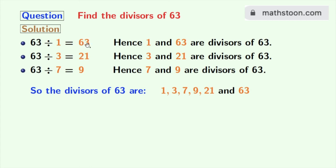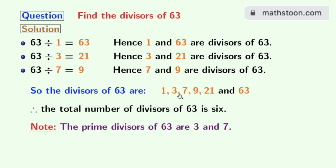So the total number of divisors of 63 is 6. Among these divisors, 3 and 7 are prime numbers because these two numbers do not have any divisor other than 1 and the number itself. So the prime divisors of 63 are 3 and 7.